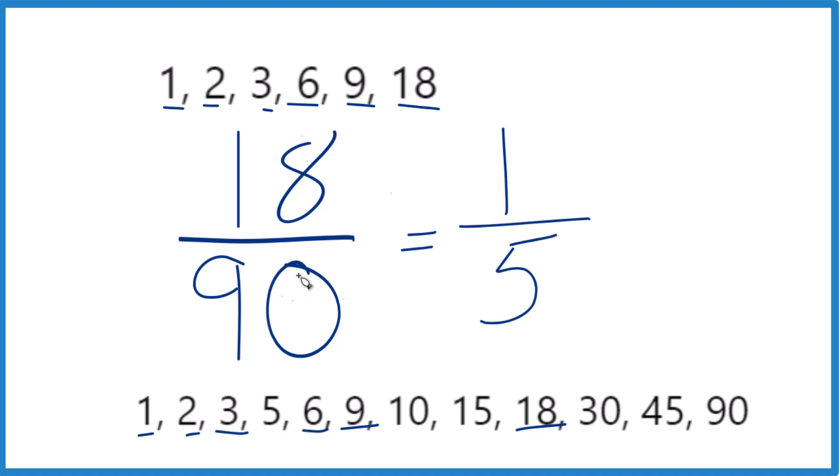So 18 90ths, when we simplify this fraction, we end up with 1 5th. And these are equivalent fractions. They have the same value. It's just that 1 5th is in lowest terms. That's 18 over 90 in lowest terms.